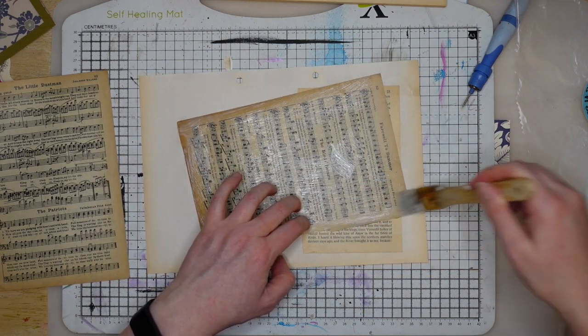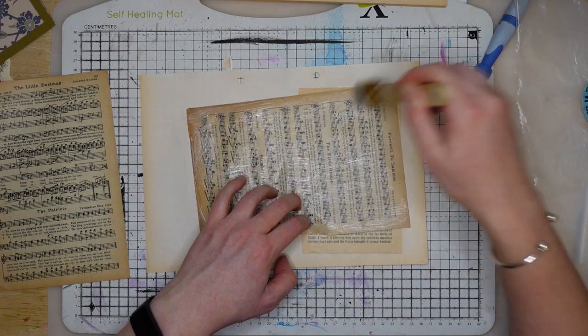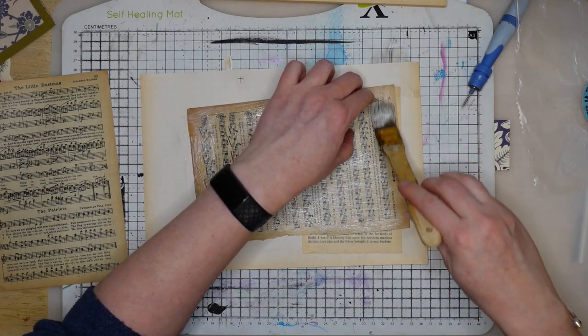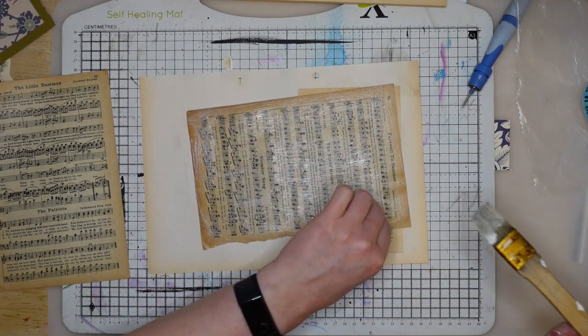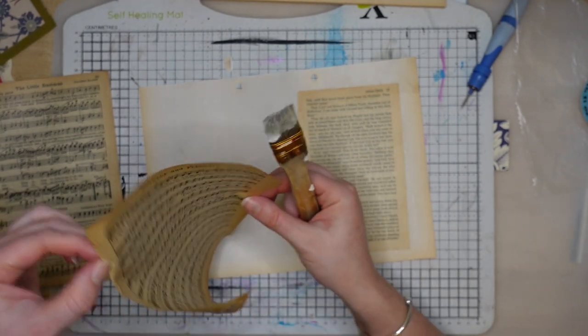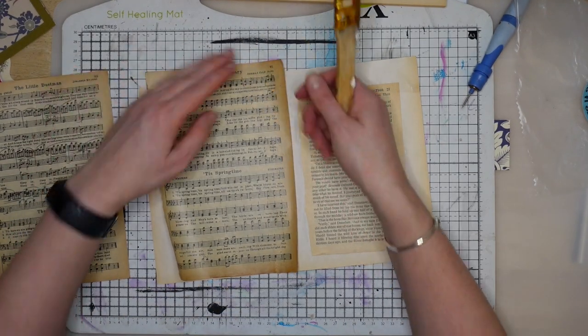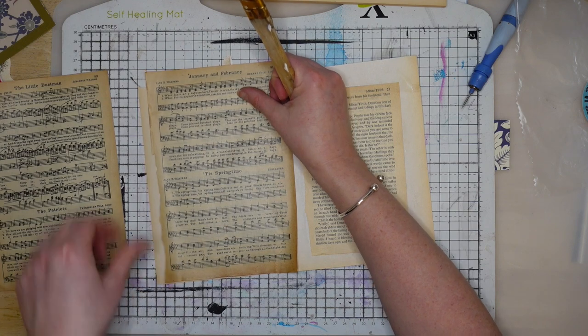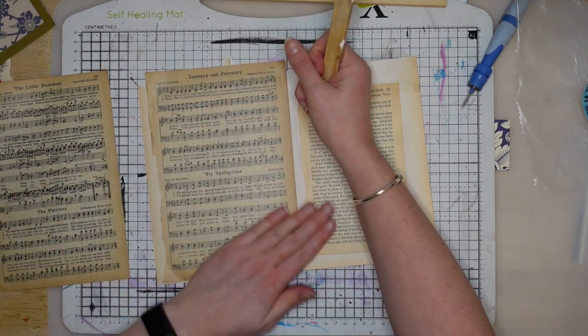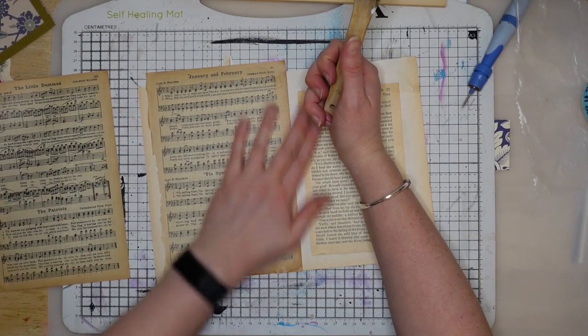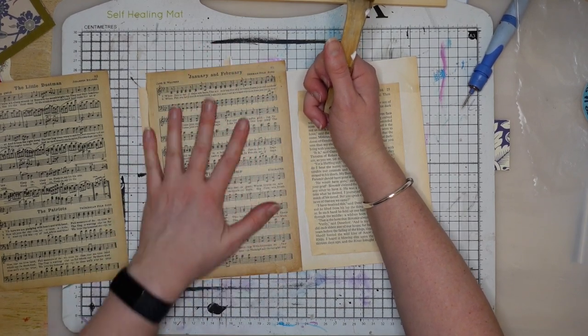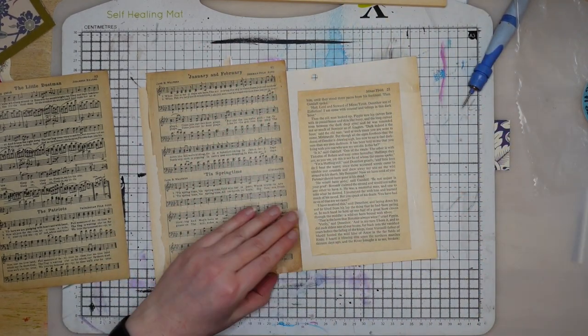Then I've got this music paper which I got from Tynemouth Market, which one of the stalls sells lots of vintage things. I'm just going to make sure that gets laid down quite flat because I want it to be flat so that it doesn't catch anything when I put it in the pocket.